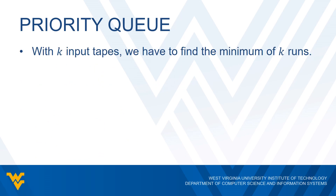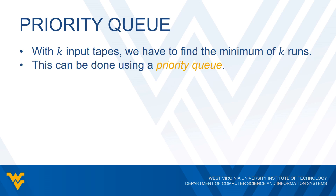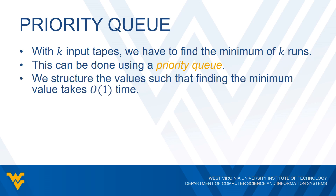Now, if we have K tapes, that means we need to find a minimum of K runs. We could just look at each run and pick the minimum one, but that doesn't seem very efficient. So there is another data structure we can use, called the priority queue. The idea of a priority queue is we structure the values such that finding the minimum value only takes constant time.